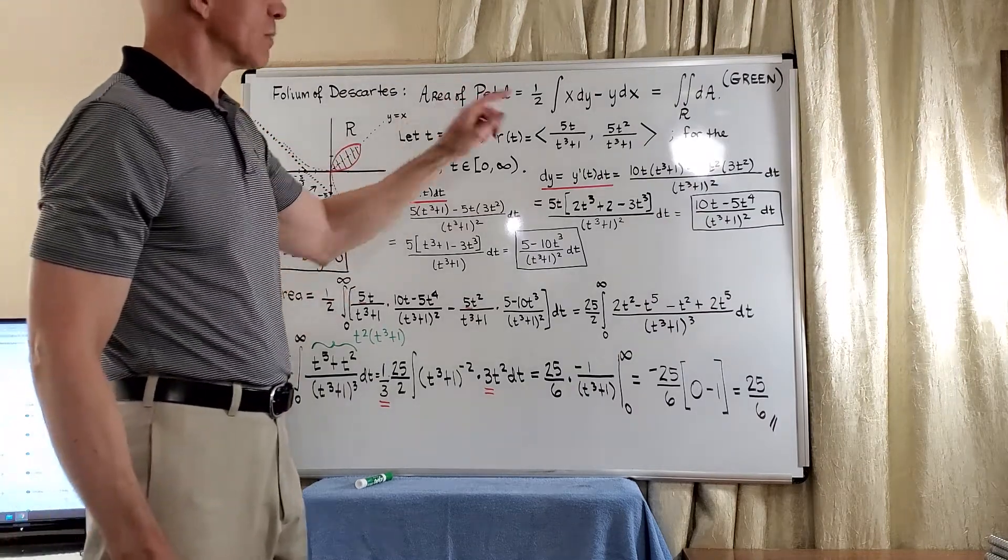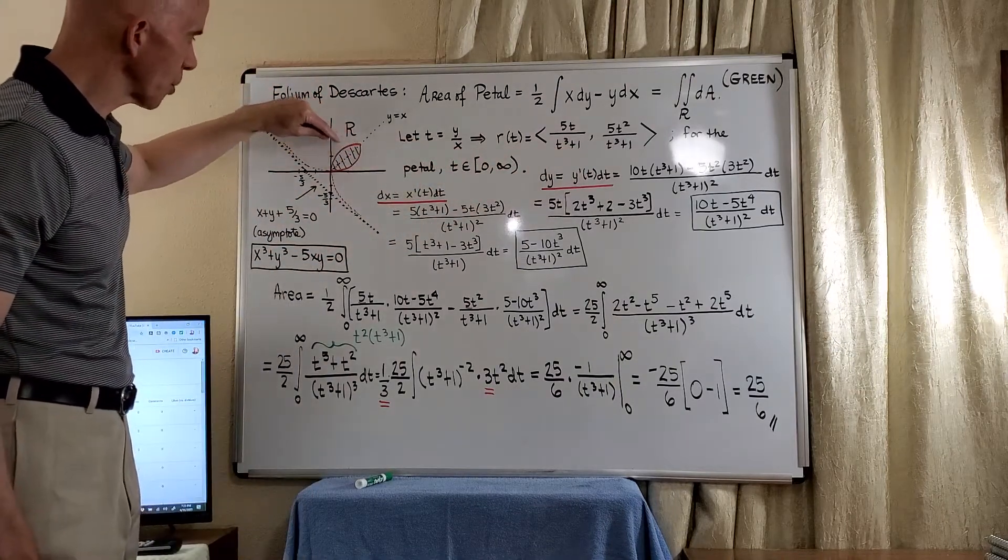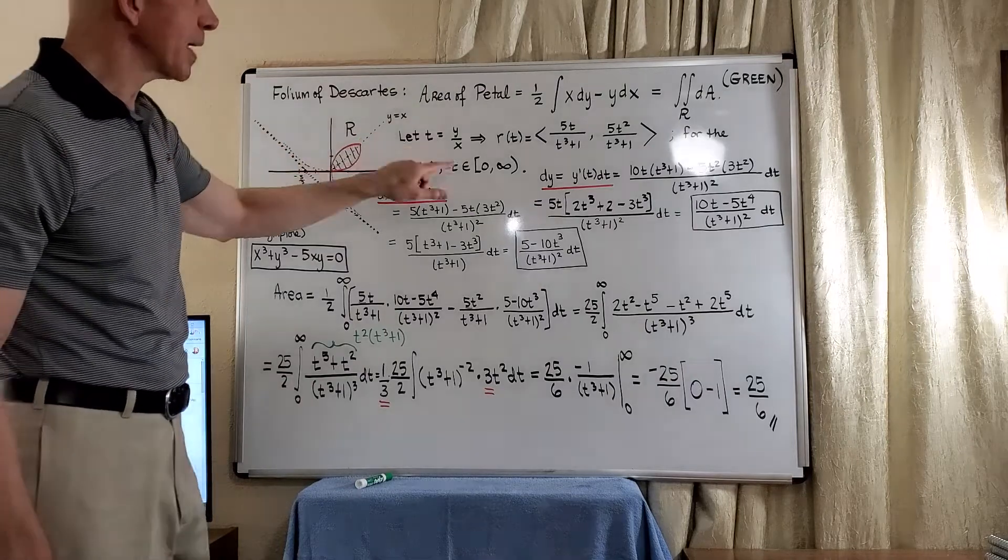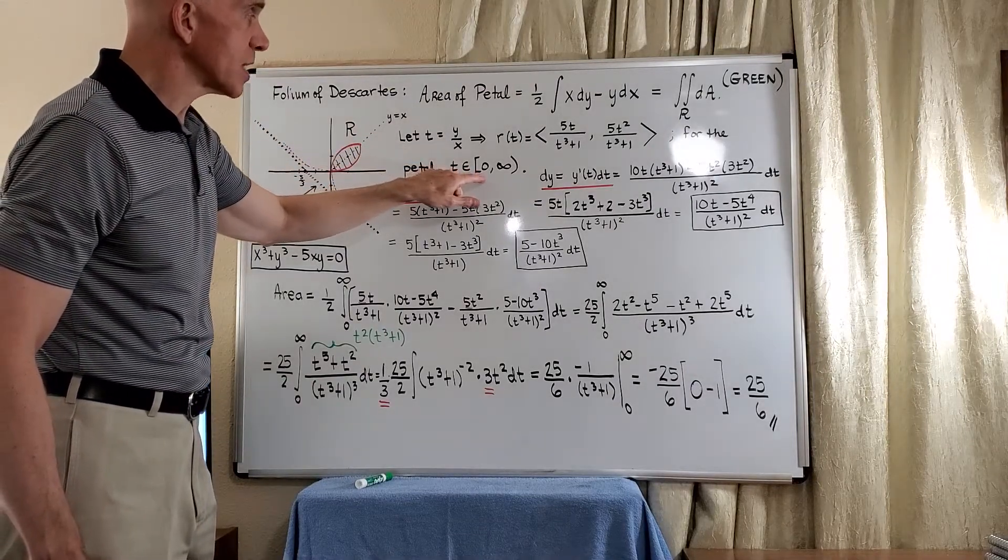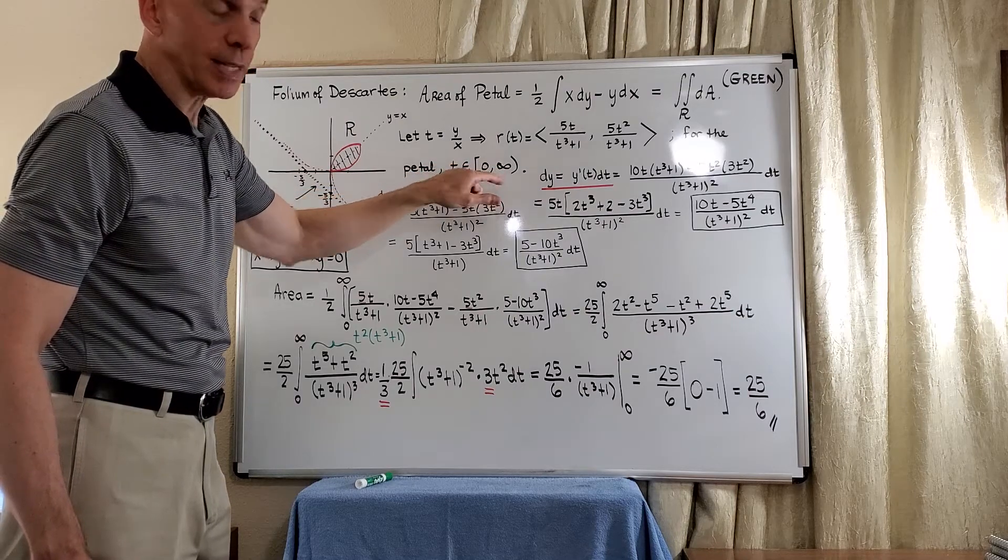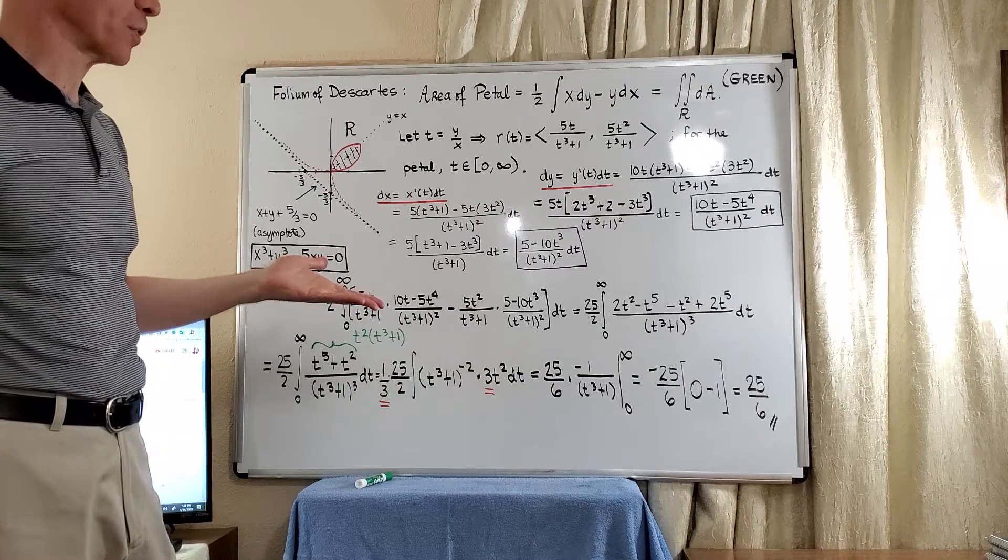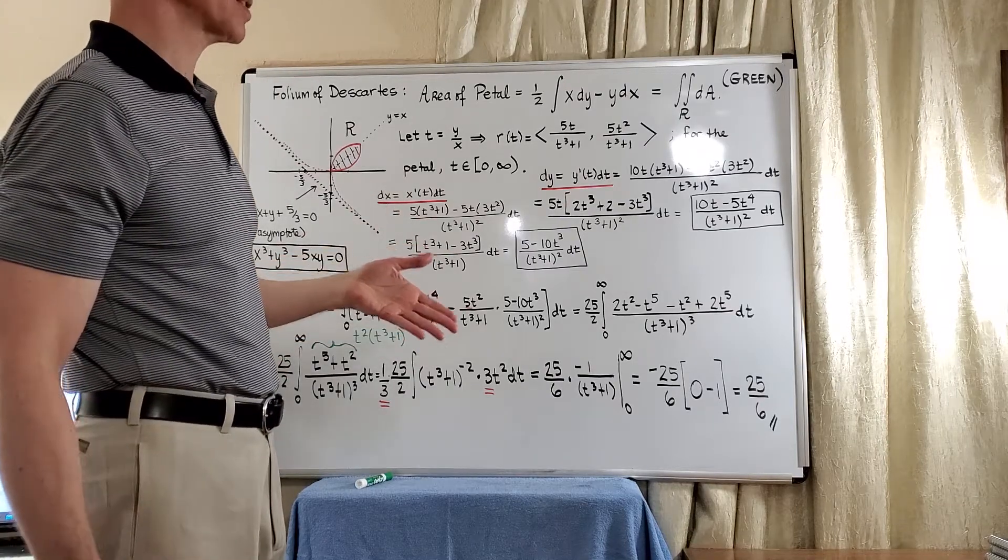For this particular curve here, we need t's to be non-negative. So the petal will be traced when t runs from 0 to positive infinity, and that's going to actually end up giving us an improper integral. But you're thinking, what integral? This is where Green's Theorem comes in.